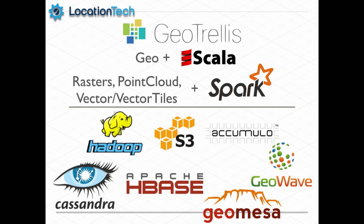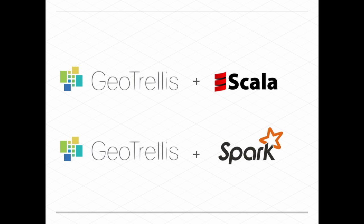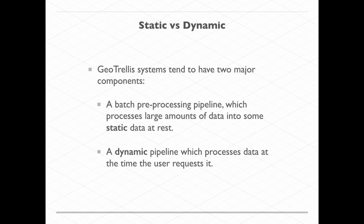GeoTrellis has geospatial plus Scala — raster, point cloud, vector, and vector tiles, plus Spark over Cassandra, HBase, S3, Hadoop, and Accumulo, and also supports vector work with GeoMesa and GeoWave. To think about it at a higher level — it's a library that can contribute to any Scala geospatial application working with raster data, and doing large-scale raster processing in Apache Spark. That dichotomy is a useful breakdown and a design principle that might be useful in a more general case as well.